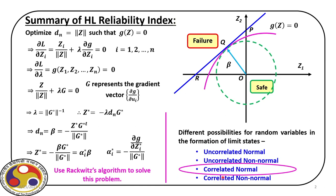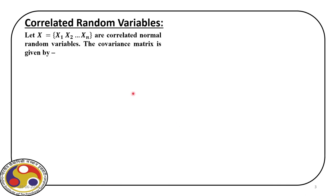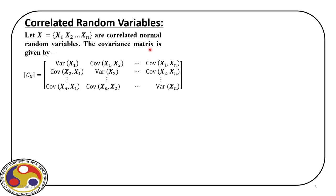Let us first start with correlated normal random variables. We have a set of random variables x1, x2 up to xn, which are correlated but for now follow a normal distribution. These correlated random variables are defined by their covariance matrix Cx, where the leading diagonal represents the variance and the off-diagonal terms represent the covariance. This is a symmetric matrix because the covariance between xi and xj equals the covariance between xj and xi.